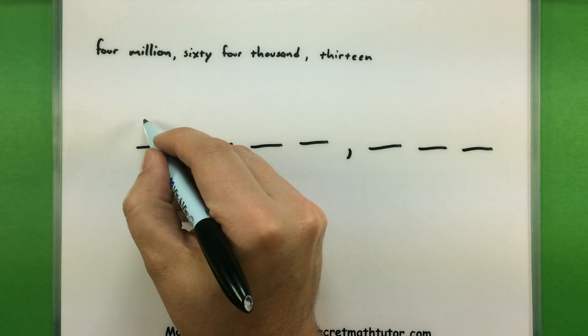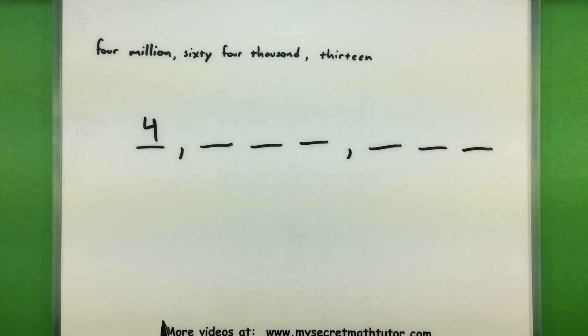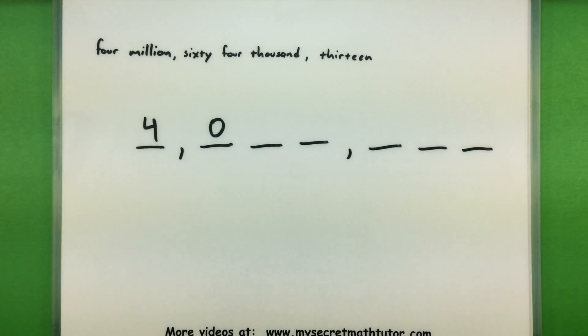So 4 is in the millions place, 4 million. And then I'm off to 64,000. So this one doesn't identify any hundred thousands. So what do I need to put in there? Well, I need to put in a zero placeholder.